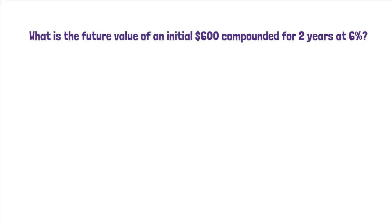What we are given is PV equals 600, i equals 0.06, n equals 2, and we need to find FV.